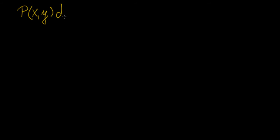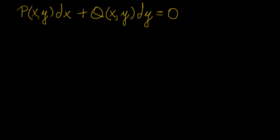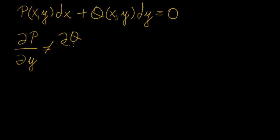I'm going to use different notation here just to illustrate the difference between exact and inexact differential equations. We're going to assume that this one is not an exact differential equation. So in this case the condition is: the derivative of P with respect to y is not equal to the derivative of Q with respect to x. This implies that there must be some function we can apply to the whole differential equation that would actually make it exact and solvable.